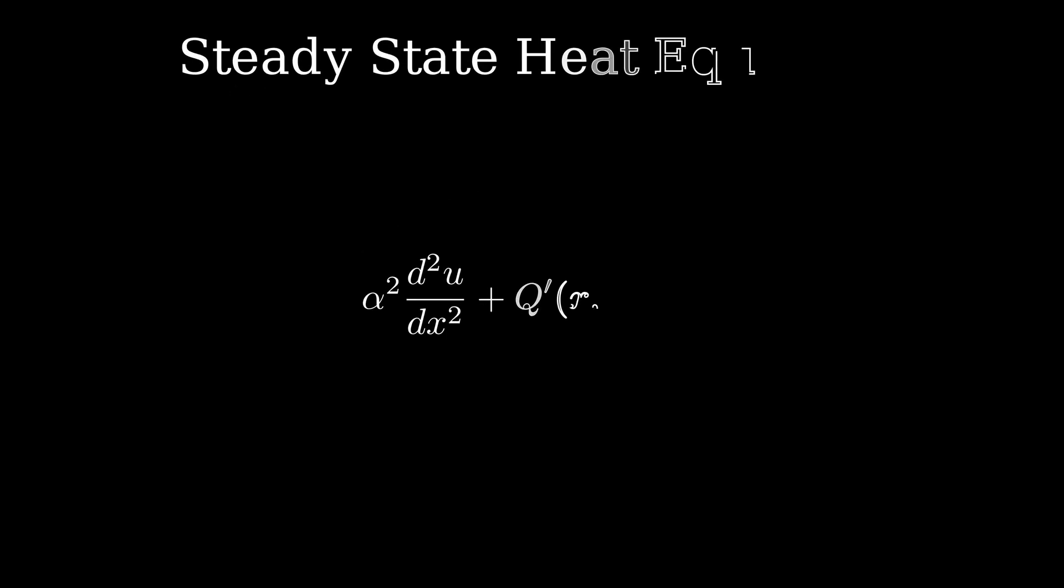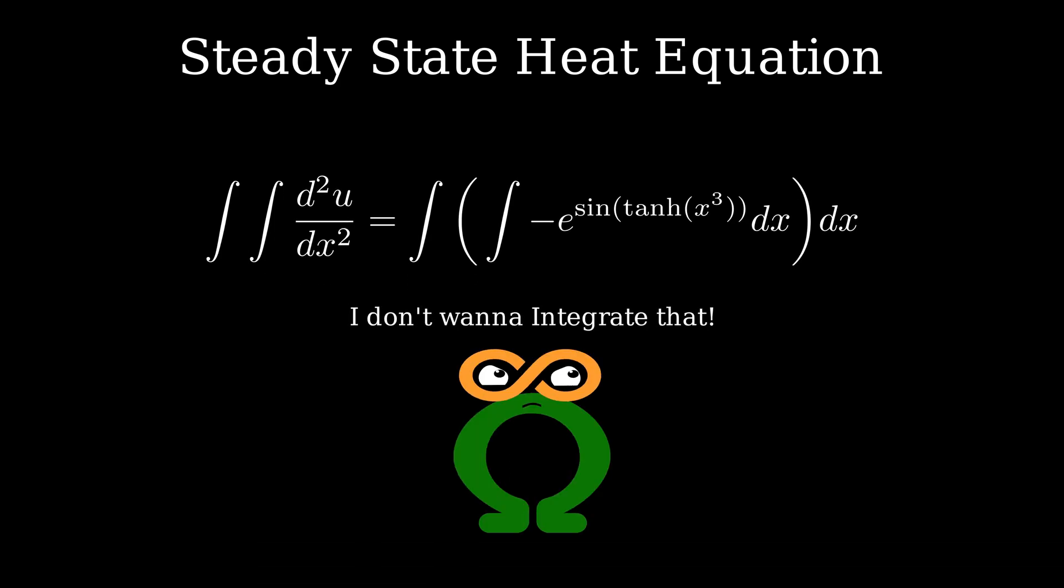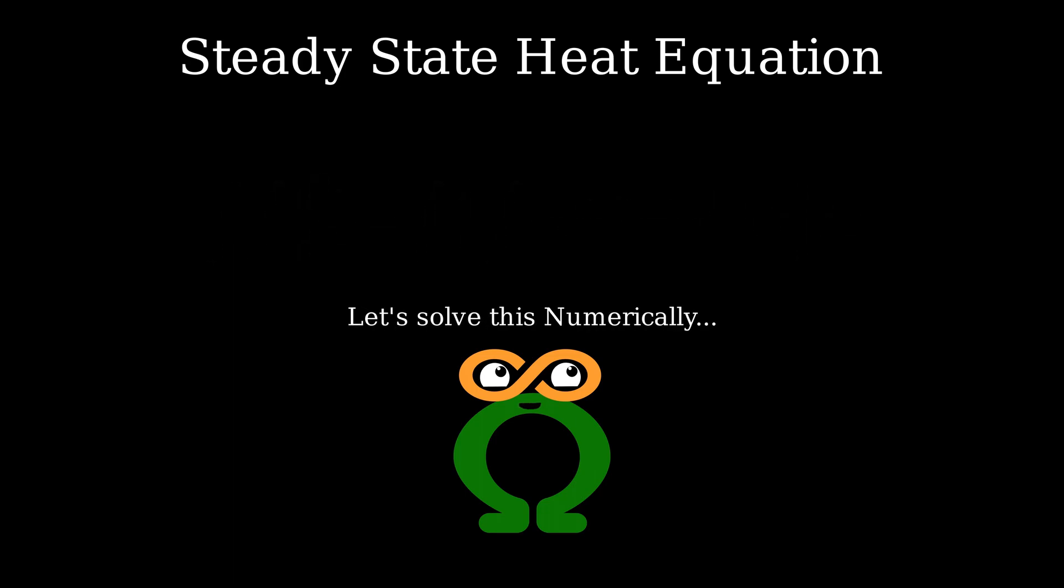Another point is that remember how I set the source term to 1 before integrating? What if the source term is some weird complex function? Now you might be able to integrate this but I can't and even if I could, I don't want to. What I want is a way to get the solution no matter what the source term or diffusivity coefficients are. This is where we can look into numerical methods and then try to solve this numerically.